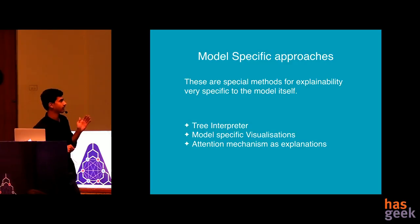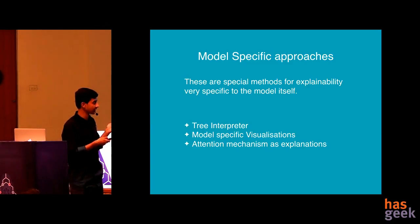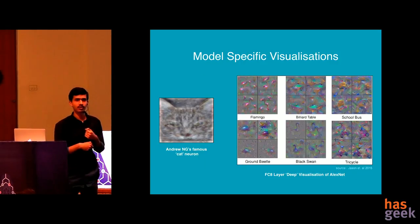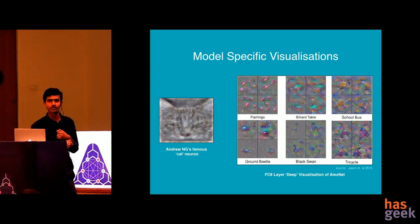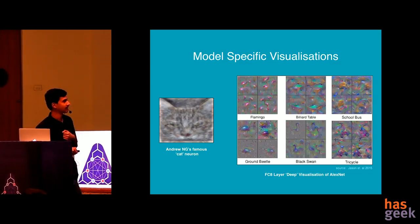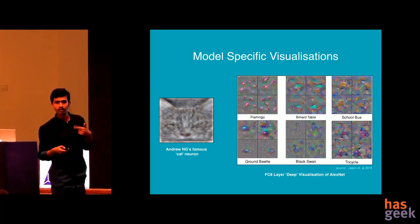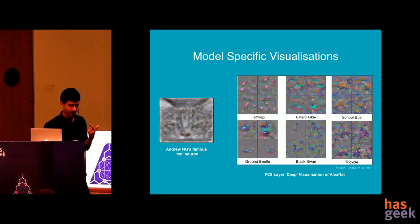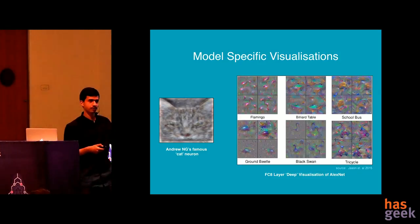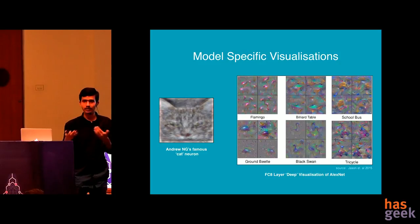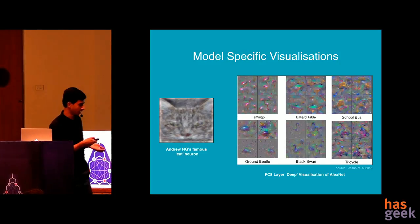One of them is model specific visualizations. This is Andrew NG's famous cat neuron. I'm guessing all of you must have seen this. And in the previous talk we saw how easy it is to fool CNNs. But the same sort of method, the gradient ascent method, can be used to visualize what is happening in a CNN model as well.